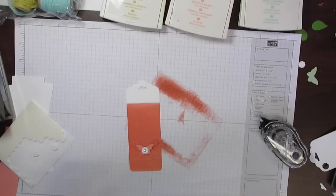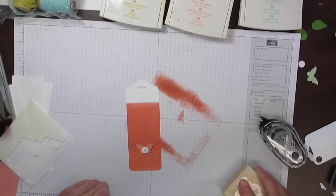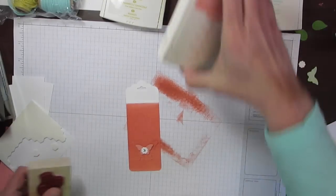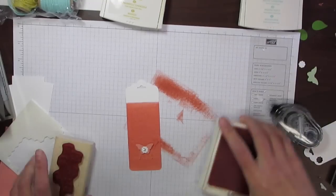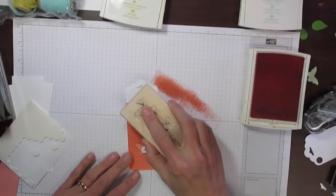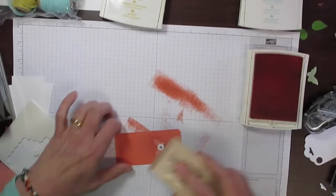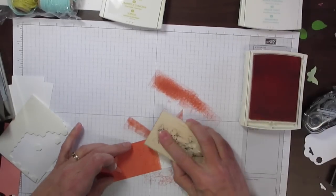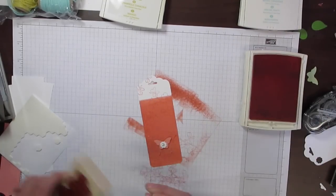Very cute. Then if you want to, you can come in with the same color ink and a stamp. So I'm going to go ahead and use this flower stamp from Happy Watercolor and just stamp that around. It just gives it a little bit of texture and a little bit of color.